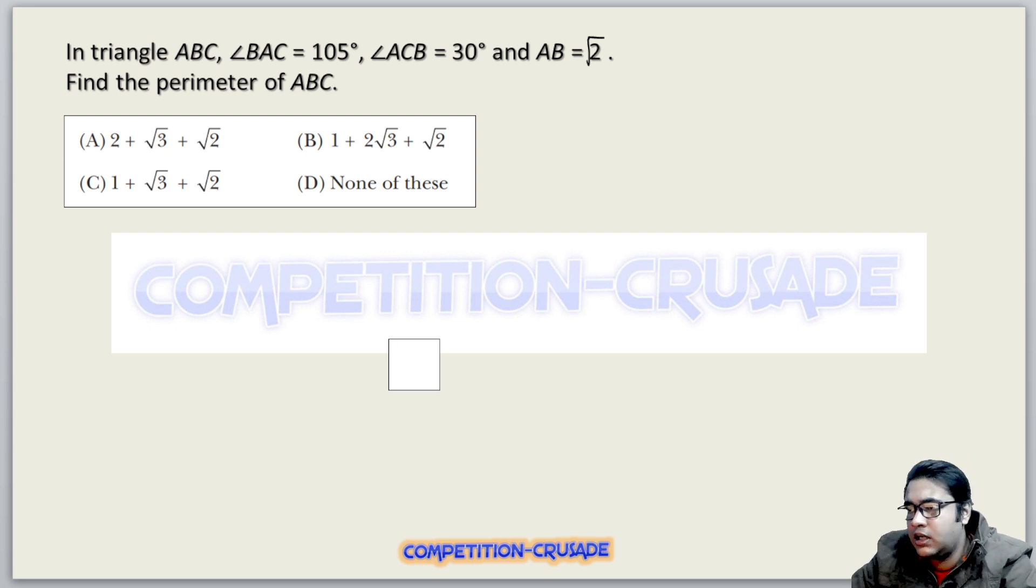First, let's read the question aloud. In triangle ABC, angle BAC is 105 degrees, angle ACB is 30 degrees, and AB is root 2. Find the perimeter of ABC. Typical question with very little information, but interesting. Let's see how we can do this.